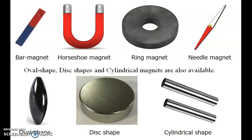Other artificial magnet shapes include oval shape, disc shape, and cylindrical shape. These are some other artificial magnet shapes.